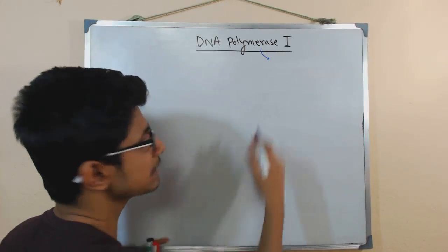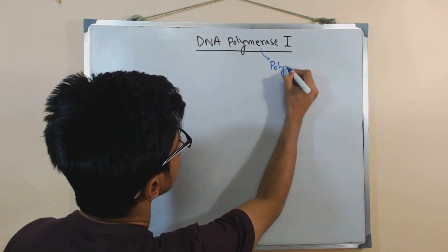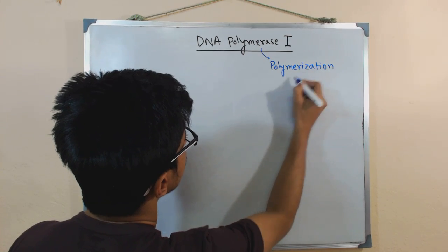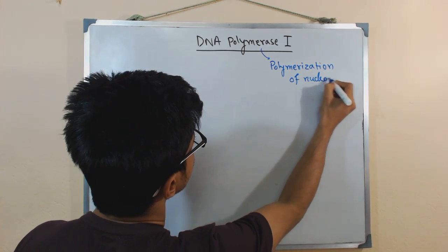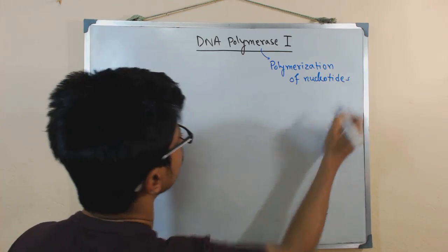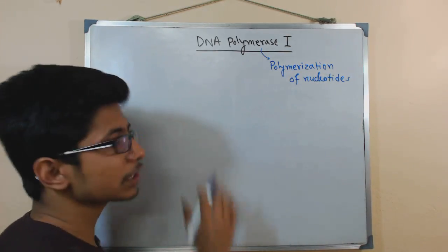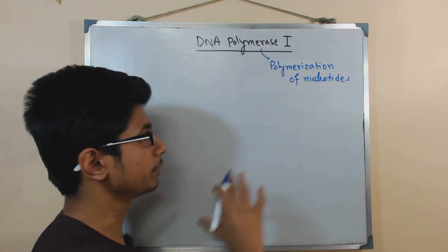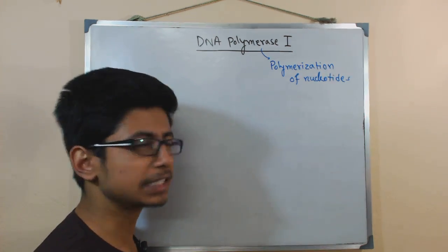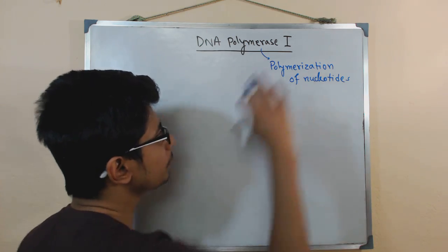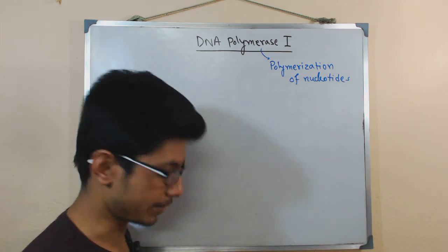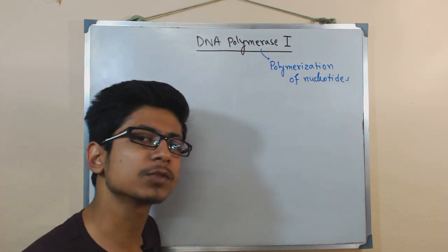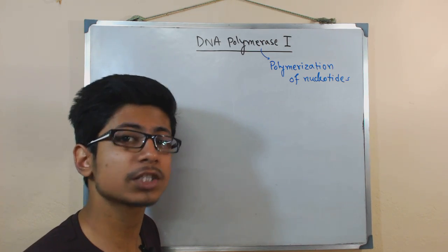The most important property is that it is a polymerase — it helps in the polymerization of nucleotides. That is the basic function of DNA Polymerase I, like the other DNA polymerases such as DNA Polymerase II and DNA Polymerase III, which were discovered later than DNA Polymerase I. So the polymerization action is always present.